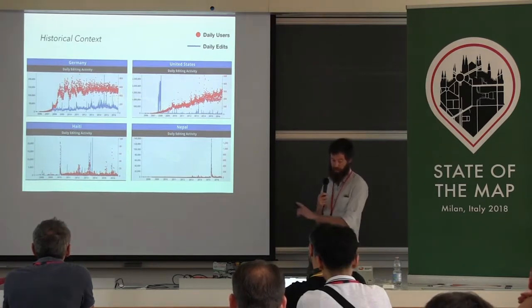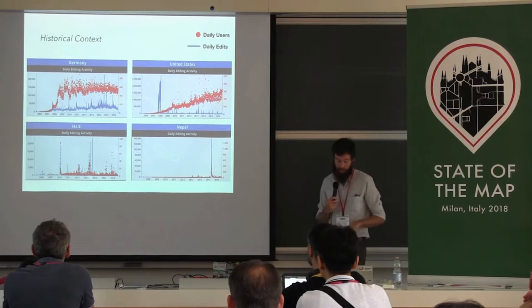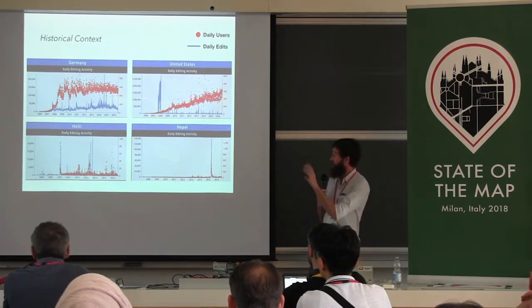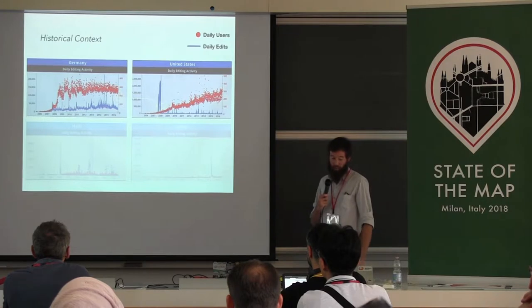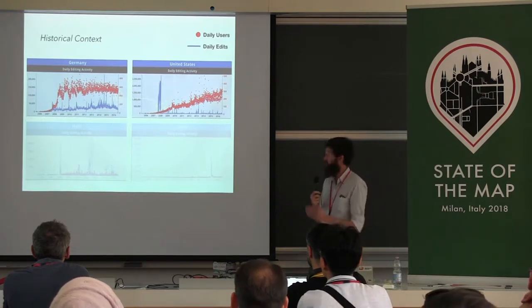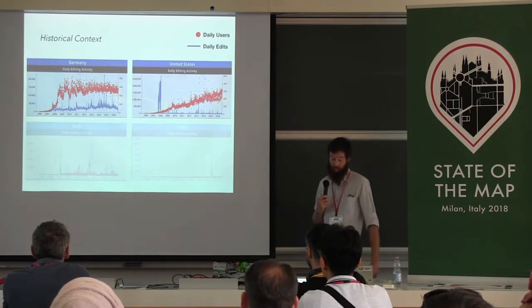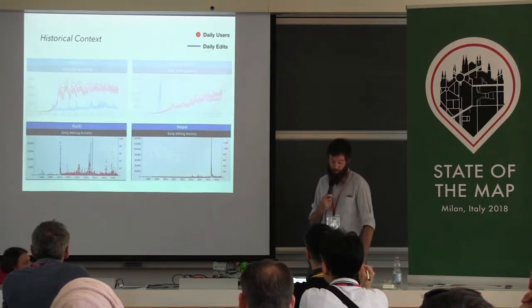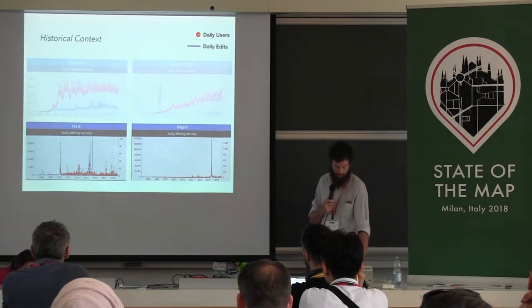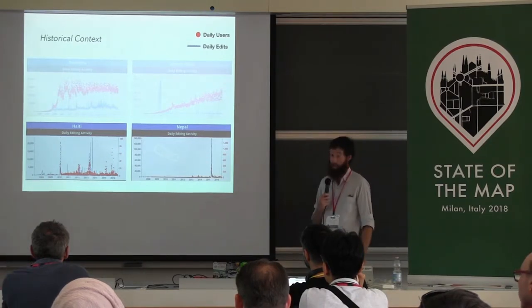Each graph tells a distinctly different story about daily activity and community growth. The number of daily users is represented by the red dots, with scale on the right; the blue lines represent daily activity, with scale on the left. Note that these scales are dramatically different — comparing raw numbers doesn't really work here, but look at the shape of the distributions. Germany grew a very active OSM community quickly and has continued to edit consistently. In contrast, the bulk of mapping in the United States was a data import in 2007–2008, and the community has grown consistently since, but that initial import greatly skews any relative activity. For both Haiti and Nepal, we see pronounced spikes in editing activity and number of users during their respective disaster mapping events. These varying histories are essential to consider when looking at the map as it exists today.